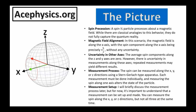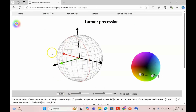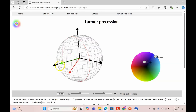For now, it's important to understand that the measurement can be set up and made. You can measure the spin along the x, y, or z directions, but not all at the same time. It's possible to measure the component of the spin along the z-axis, the y-axis, and the x-axis. Here's an animation: the magnetic field is along the x-axis and the spin is precessing. It's spinning and its projection along the x-axis is always h-bar over two.